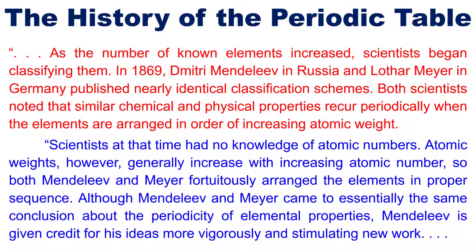Scientists at that time had no knowledge of atomic numbers. Atomic weights, however, generally increase with increasing atomic numbers, so both Mendeleev and Meyer fortuitously arranged the elements in proper sequence.